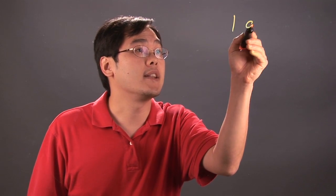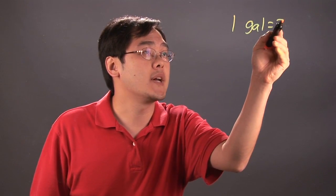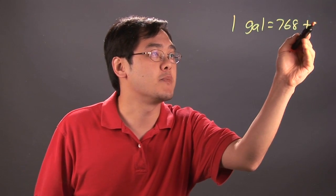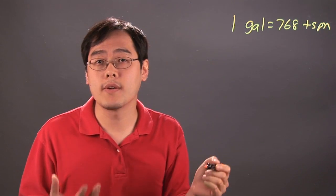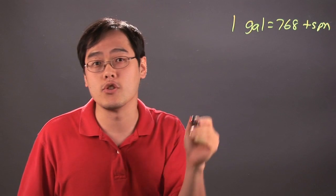So if you remember this little relationship, you'll be good to go. One gallon is equal to 768 teaspoons. So whenever you convert from gallons to teaspoons, you remember that fact and you're okay.